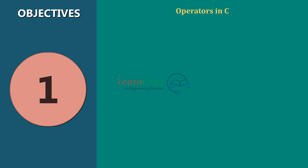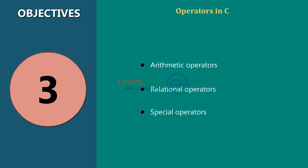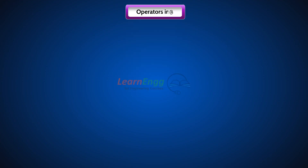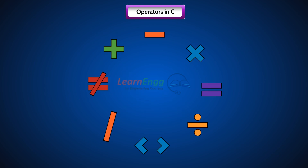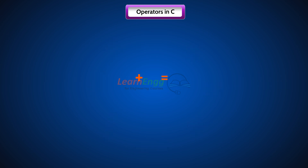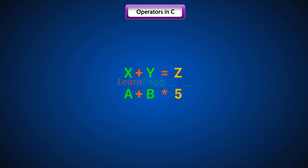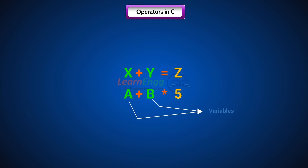Operators are the symbols which are used to perform logical and mathematical operations in a C program, and are called C Operators. These C Operators join individual constants and variables to form expressions. For example, in the expression A plus B multiplication of 5, plus and multiplication are operators, A and B are variables, 5 is a constant, and A plus B multiplication of 5 is an expression.